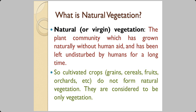The plants that we cultivate, whether crops or orchards, are not taken into consideration as natural vegetation because they have been planted by us. But the plant community which has grown naturally without any human aid and has been left undisturbed for a very long time — such plants are known as natural vegetation or virgin vegetation. This is one definition you should know.